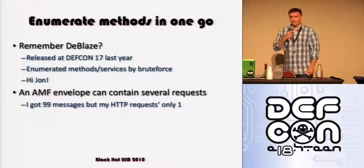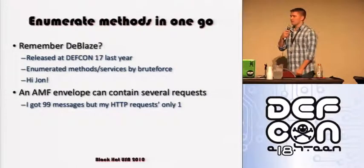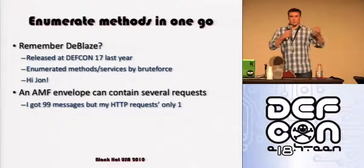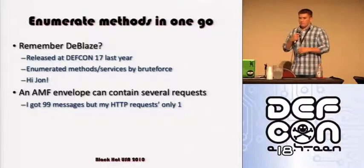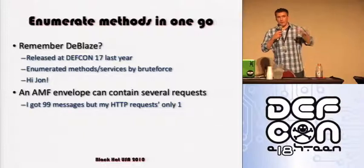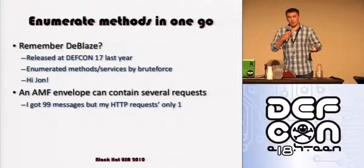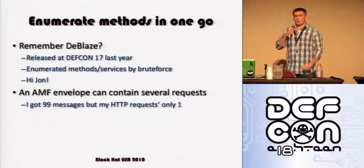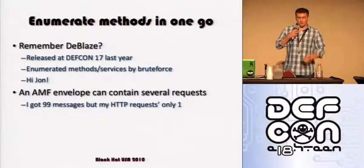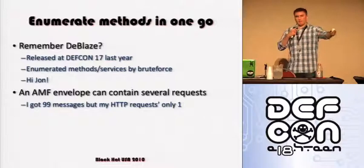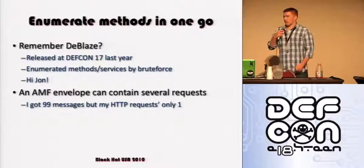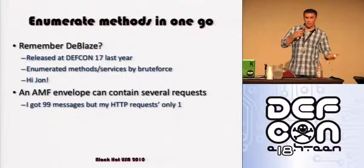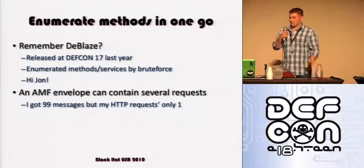Shout out to my buddy John Rose last year — he wrote a tool in Python called Dblaze that basically enumerated methods and services in a remoting server, but he did it by brute force, one HTTP request at a time. The cool thing about AMF is all AMF requests are packaged inside an AMF envelope. So I thought — why not do this all at once? My HTTP request ended up being 200,000 bytes long, but I just enumerated 10,000 methods and services on one server in one HTTP request, which was awesome — it only took about a minute to respond.